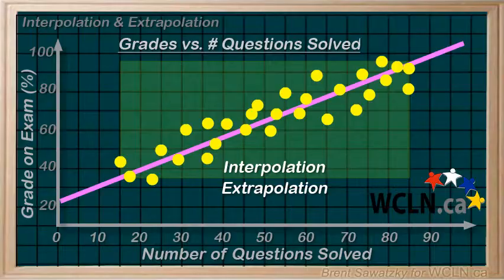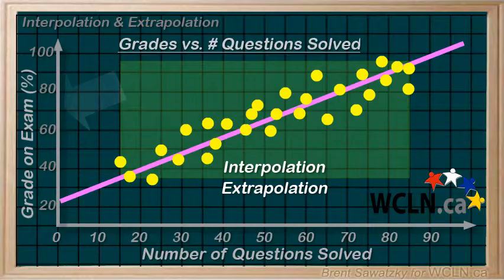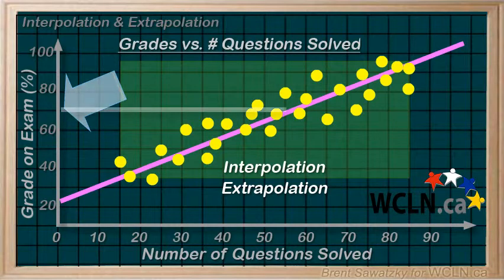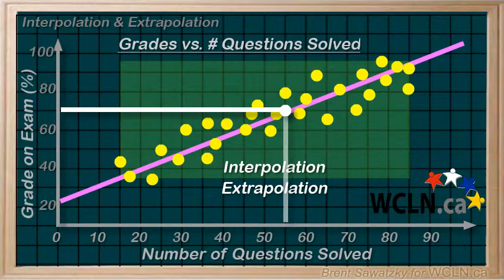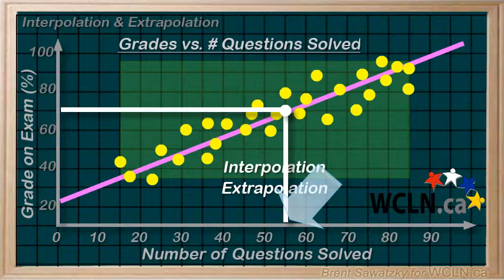Another one, what would you suggest is the minimum number of questions that they should do based on our data? So, we look on the y-axis for 70% and follow it across and down and we see that they should be doing at least 55 questions.